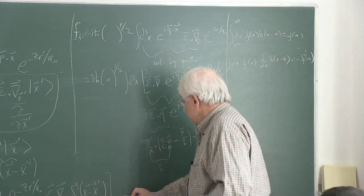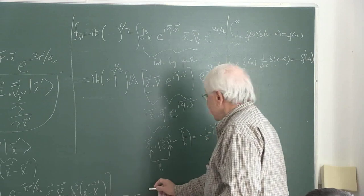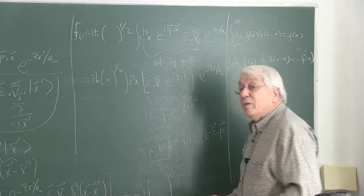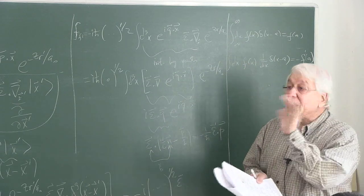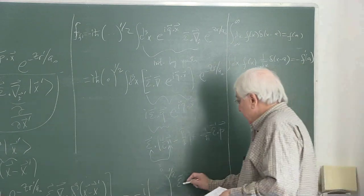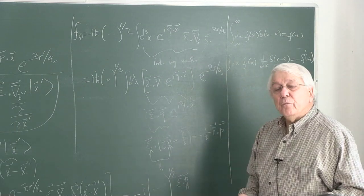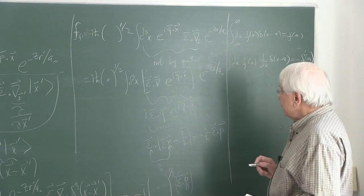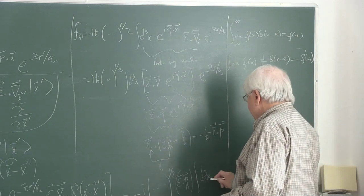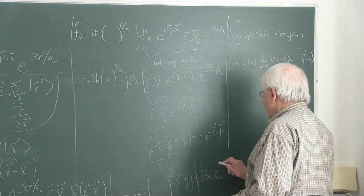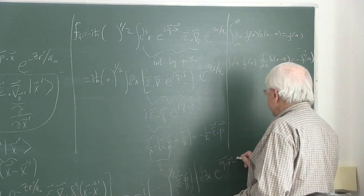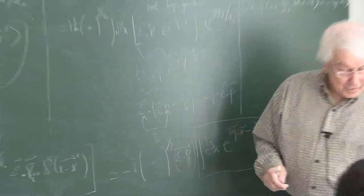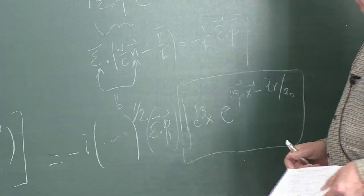The h-bars cancel, leaving a factor of minus i times the normalization factor times epsilon dot pf — the momentum of the outgoing final electron. What is left over is just the single integral: d-cube-x times e to the i q dot x minus Z r over a0. It is amazing that we could reduce it so quickly to this form; all the rest is just the physical parameters of the problem.